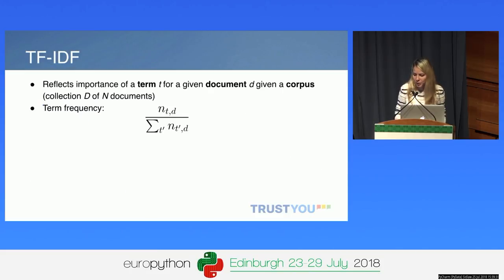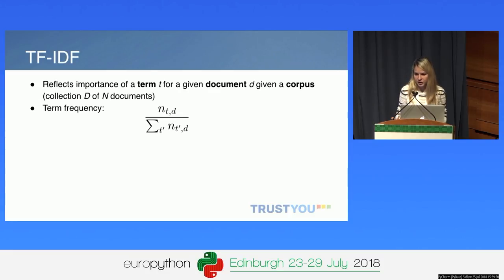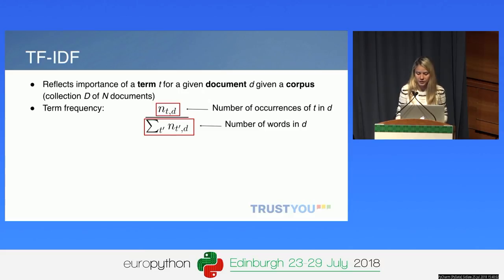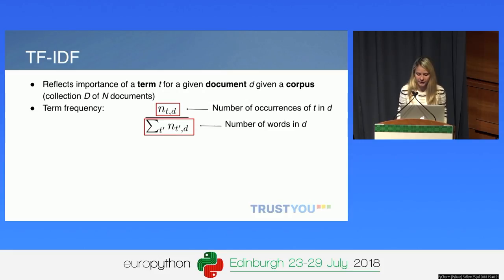Now I'm going to talk about TF-IDF — this is the only slide with formulas, don't be scared. It's actually quite a simple method. The idea behind TF-IDF, which stands for term frequency–inverse document frequency, is to reflect the importance of a term T for a document D in a corpus — a collection of other documents. The term frequency is simply the number of occurrences of T in D divided by the total number of words in D. We might assume that a term is important for the document if its frequency is high.